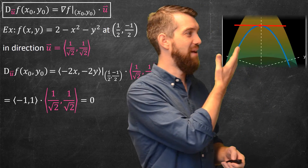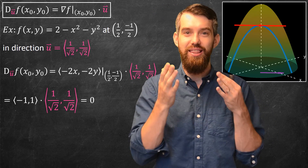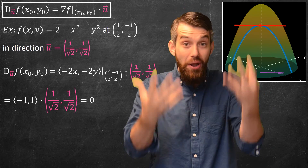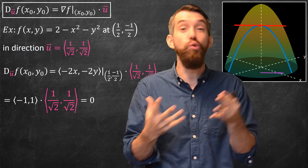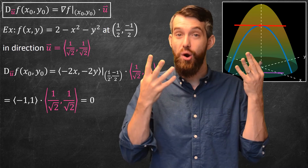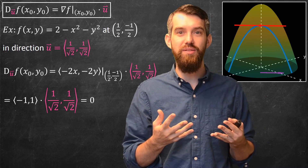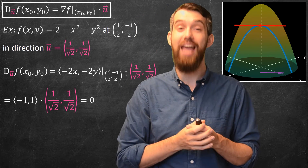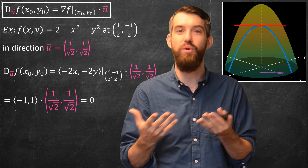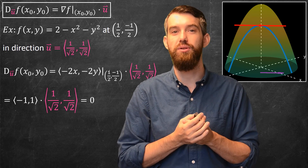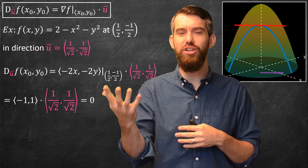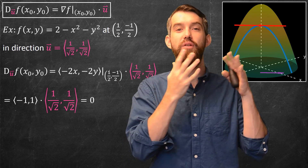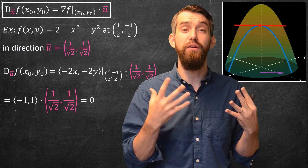Let's visualize this result. At the point (½, −½), going in the direction (1/√2, 1/√2) — where x and y are equal — the directional derivative is 0, meaning there is a horizontal tangent line at that point, as you'd expect when a derivative is zero. For any other function, as long as you compute the partial derivatives, finding directional derivatives is a straightforward computation.